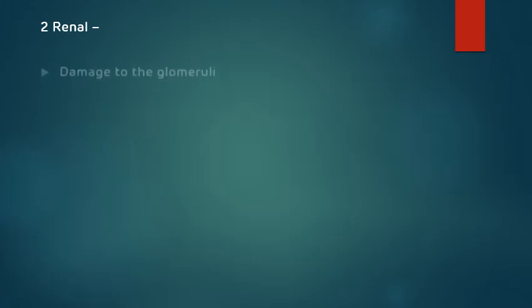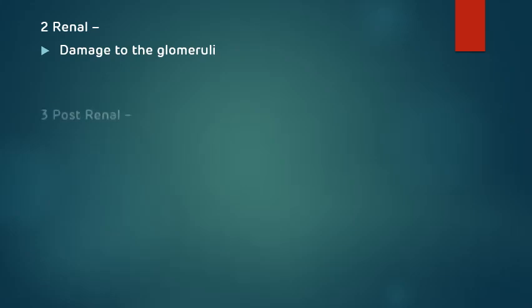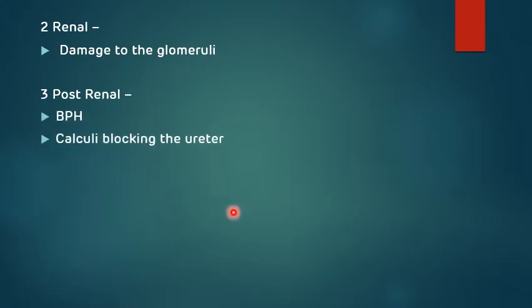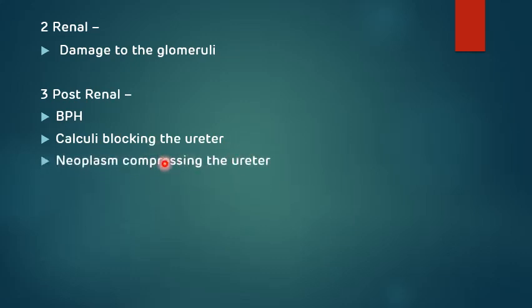In renal conditions, if there is damage to the glomeruli, that leads to acute renal failure and chronic renal failure, in which condition there will be an increase in the creatinine level. Post-renal conditions include benign prostatic hypertrophy, calculi blocking the ureter, and a neoplasm which can compress the ureter. So these are the pre-renal, renal, and post-renal conditions which lead to increase in serum creatinine.